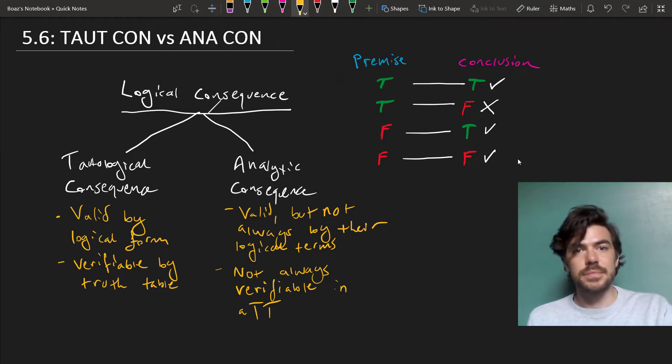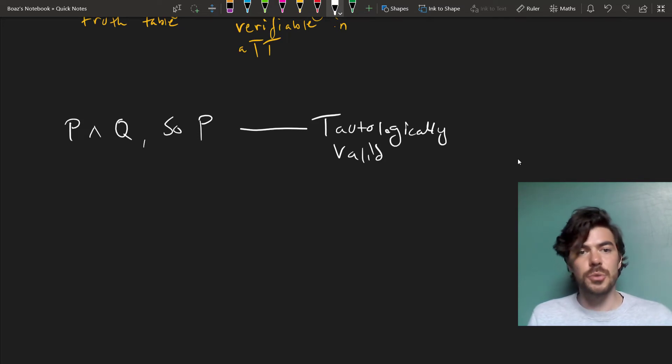Here are two examples. P and Q, so P, is tautologically valid. If it's raining and the game is cancelled, then it's raining. And that's going to hold no matter what sentences you plug in there, because it's a matter of the meaning of the logical term AND.